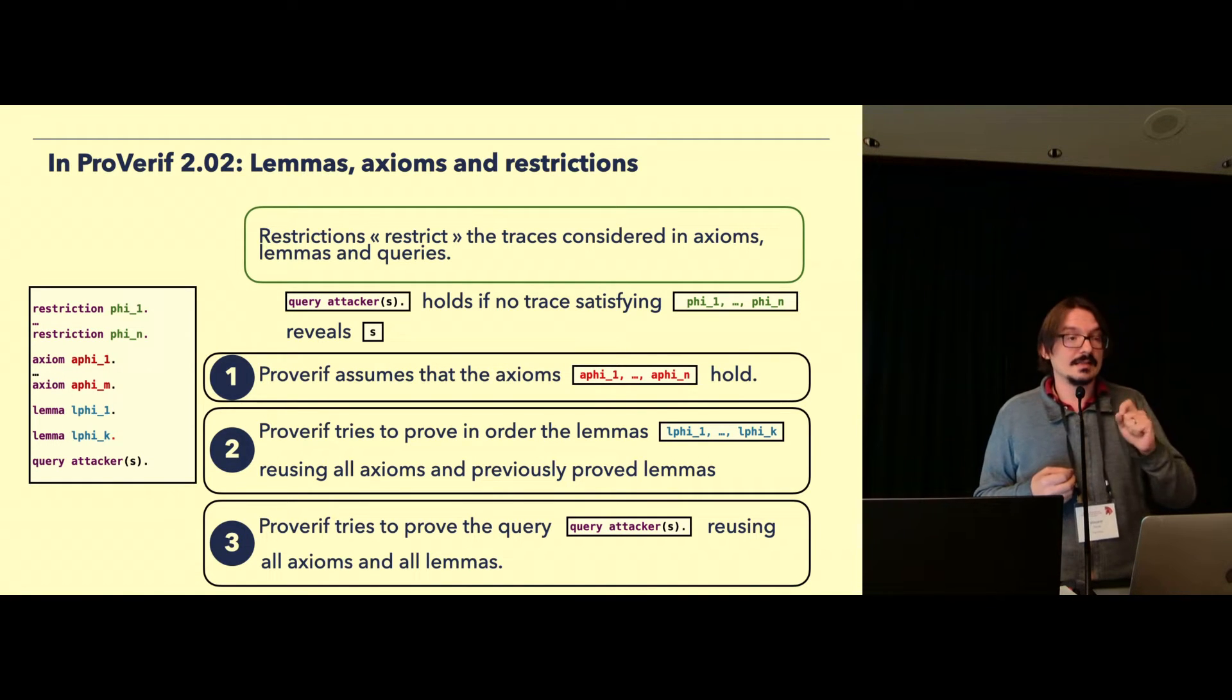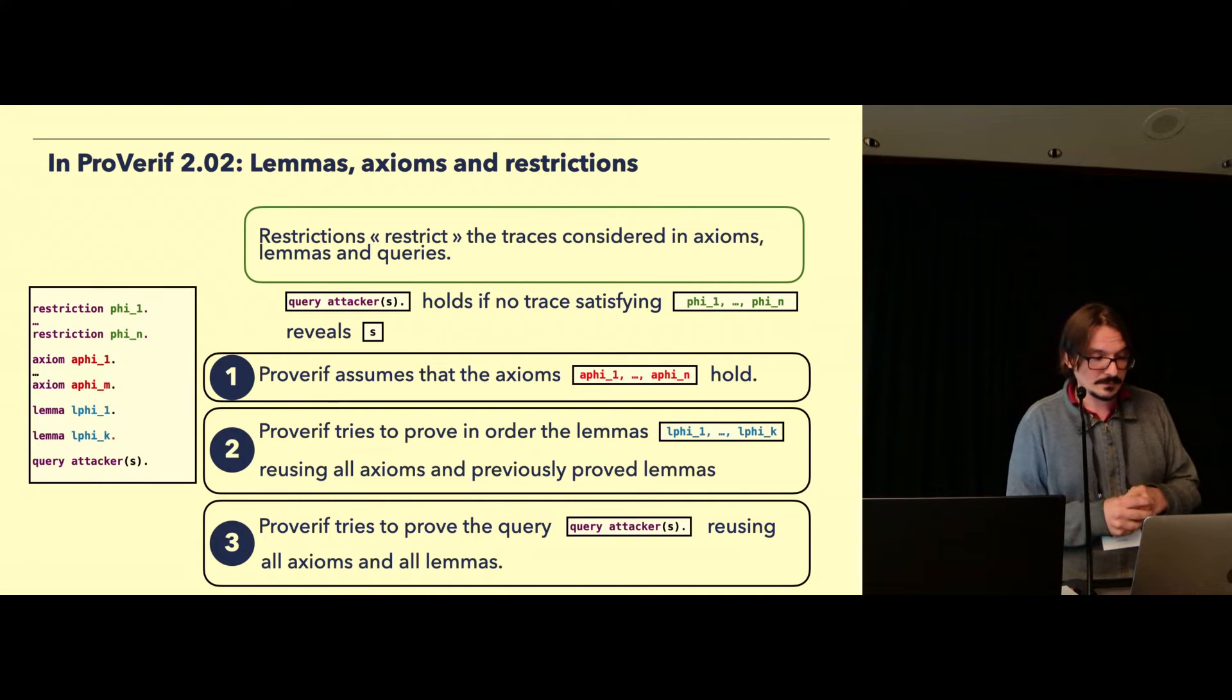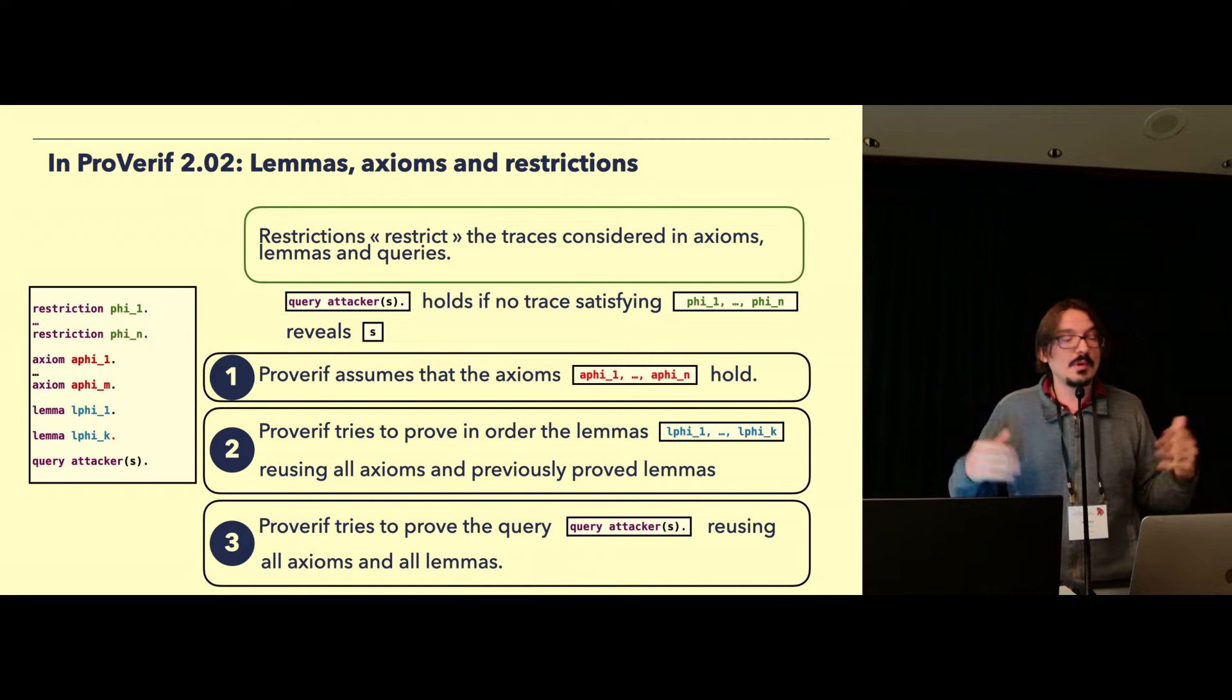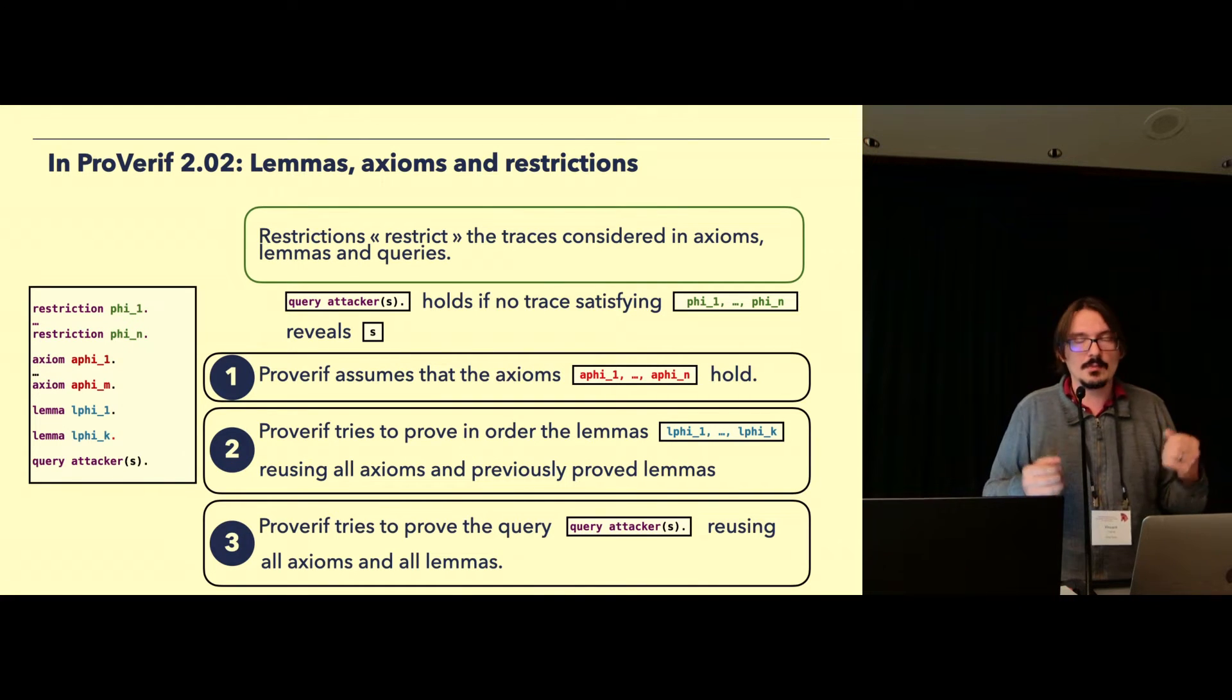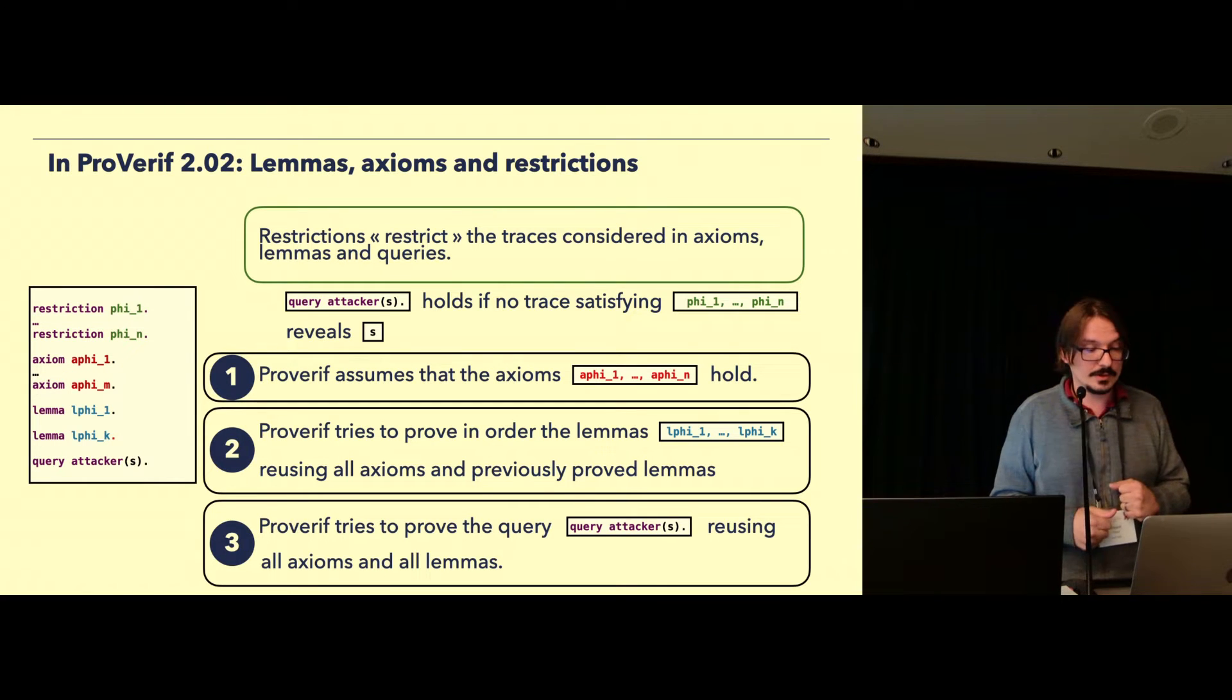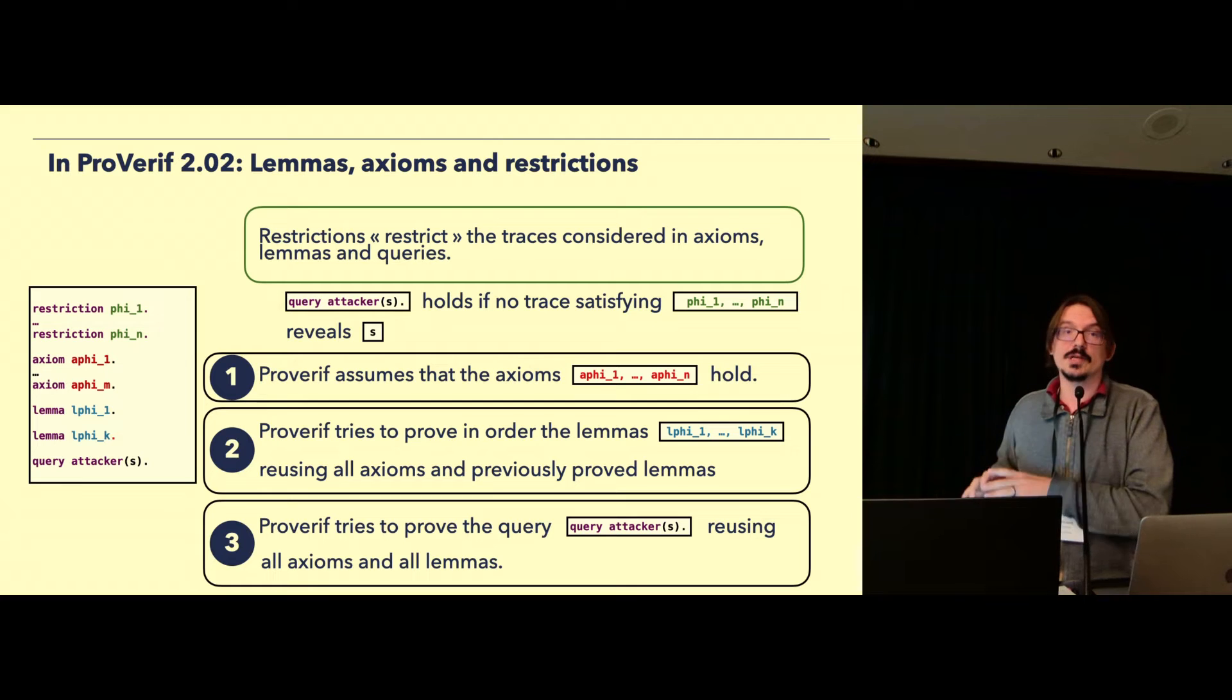This is how we re-inject some of the precision that was lost during the translation from the protocol to the Horn clauses, by adding axioms that fit the semantic of the Dolev-Yao model. And once all the lemmas are proved, ProVerif tries to prove the main query using all the lemmas and all the axioms. So those lemmas are typically applied within the saturation procedure that I mentioned earlier.